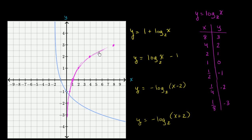This is the behavior we'd expect. As x becomes really large, you think about what power you have to raise 2 to to get that x — it's going to increase, but at an ever decreasing rate. As x approaches 0 from the right, you have to raise 2 to more and more negative values, so the log becomes very, very negative. We can never quite reach x equals 0 — you can't raise 2 to any power and get 0, so the function is not defined for non-positive x values. The domain is only positive x's.